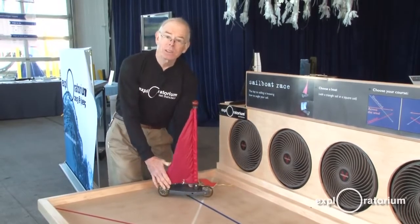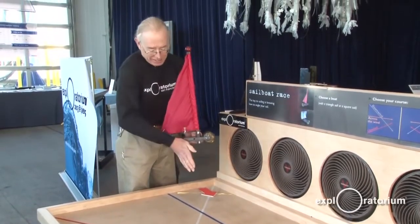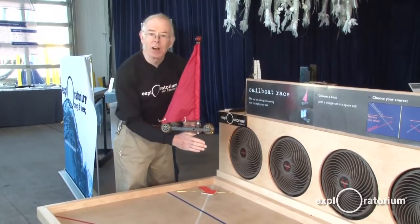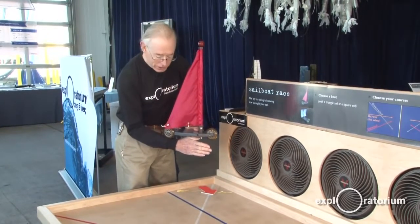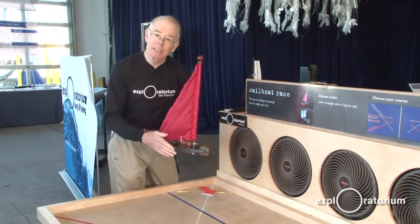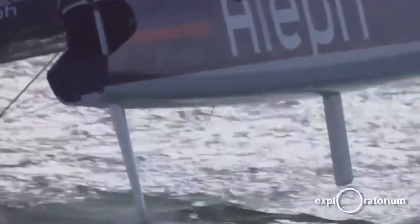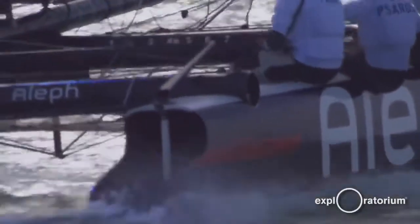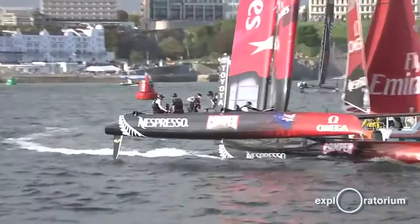To prevent that, boats have keels. It's a large extension of the hull below the water, which can't move easily sideways in the water. The America's Cup boats have dagger boards, which stick down into the water. That allows the boat to use the force of the wind to go into the wind.